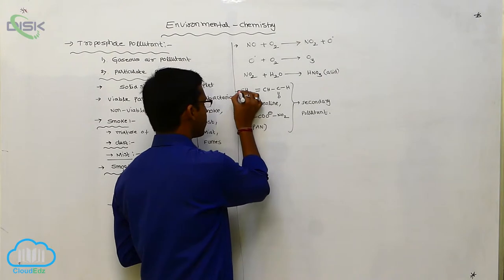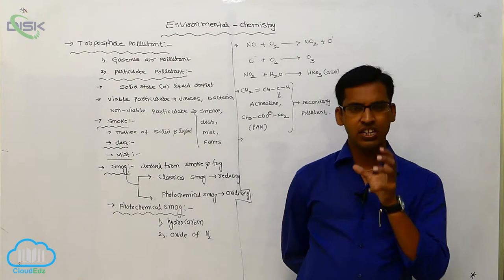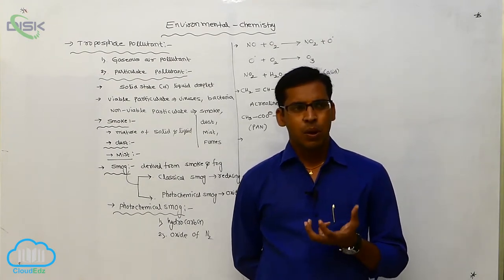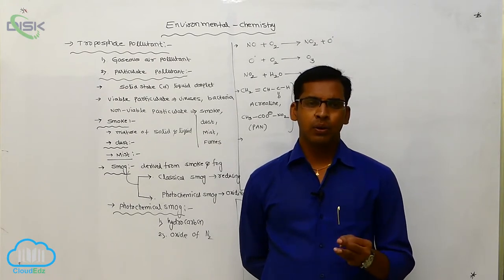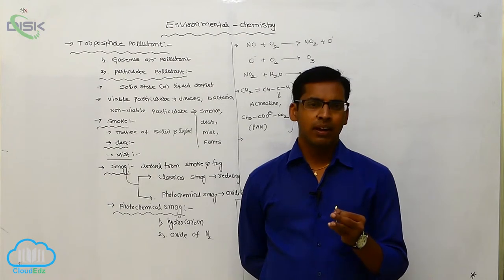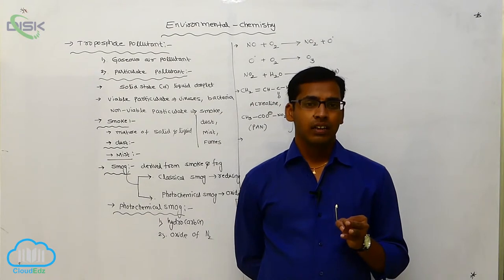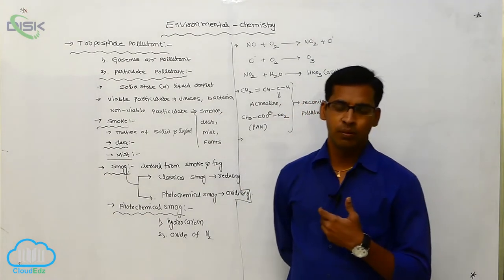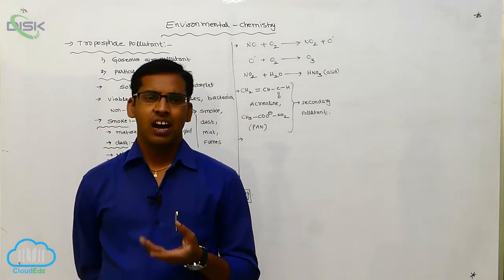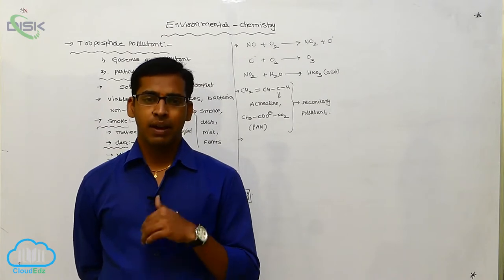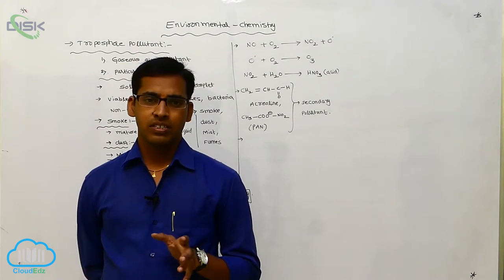And next one is the lead. Lead is a very dangerous compound, it causes more harmful effects in human beings. The lead petrol, so generally lead petrol was used in olden days. It causes more serious effects on human beings, it mainly causes skin diseases, asthma, bronchitis, respiratory issues. It mainly affects the respiratory system.